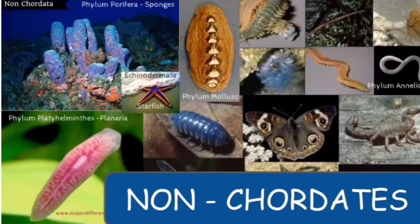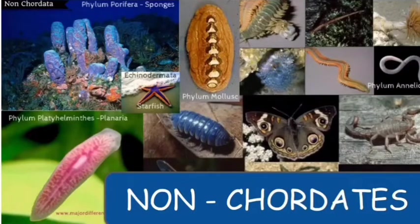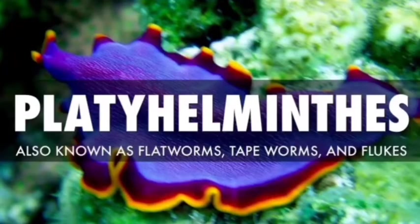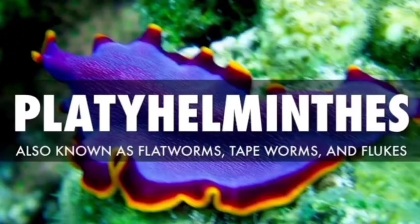We are going to learn about phylum Platyhelminthes, which comes under a group called nonchordates — generally called as invertebrates, which do not have a vertebral column. This phylum Platyhelminthes is also known as flatworms. The Greek word 'platy' means flat and 'helminth' means worm, so they are commonly called flatworms. There are about 12,000 species.